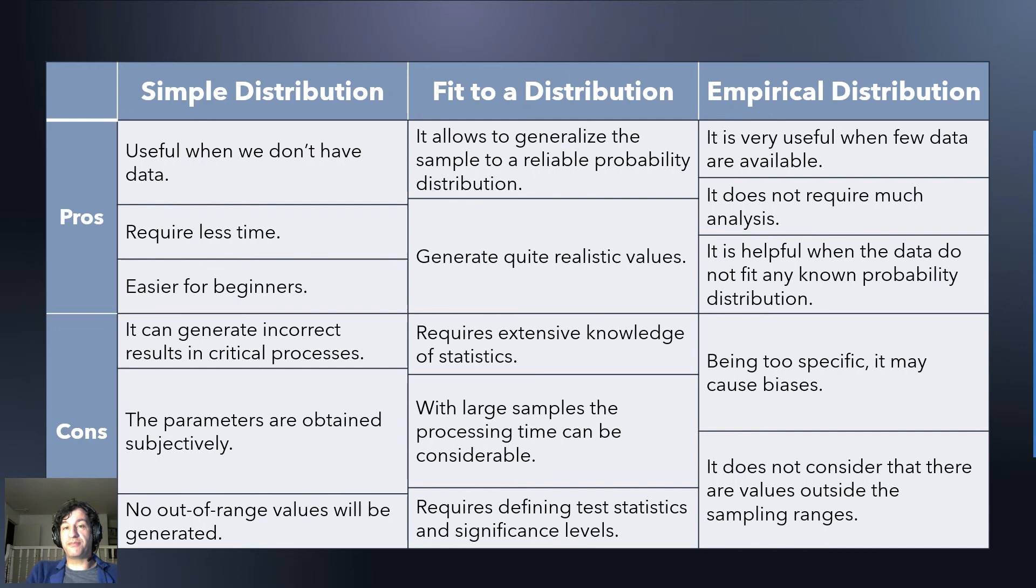And since empirical distribution doesn't require you to think at all very much, you might have this bias. When you fit a distribution, you need to think a lot about the context, so it's less likely that you make such a mistake. And anyways, if you have empirical distribution, you don't use values that are outside of the range that the data has, and that may cause problems too. So these are the pros and cons for all these options.